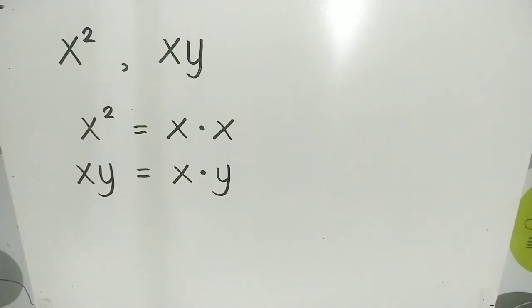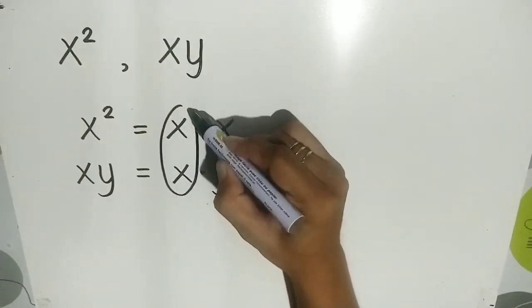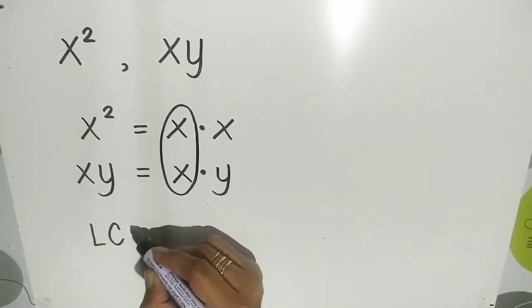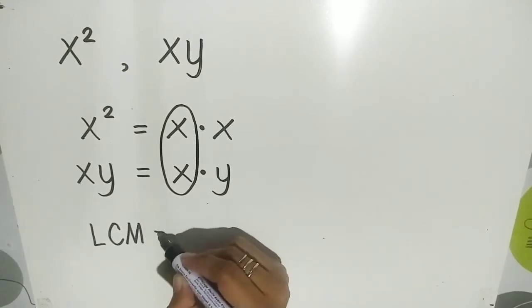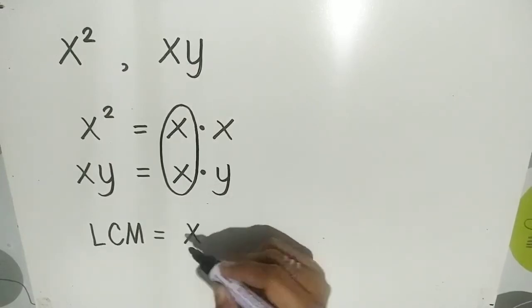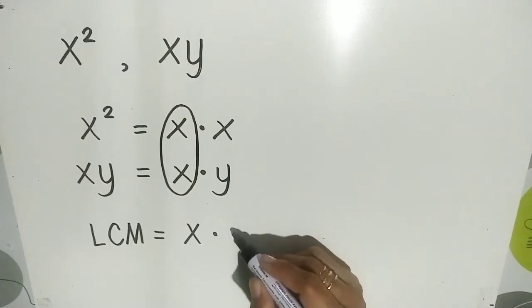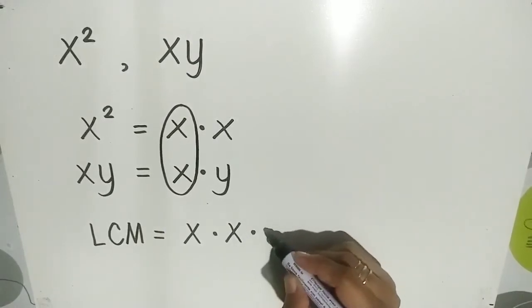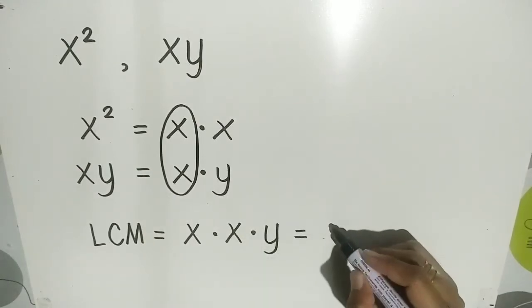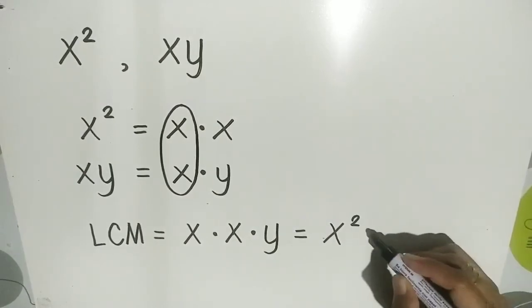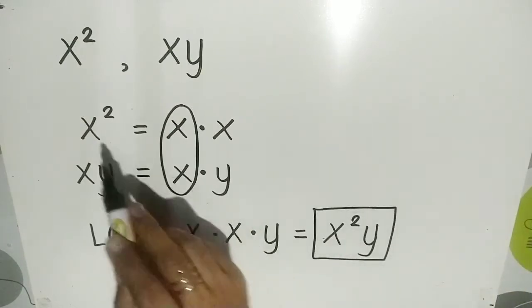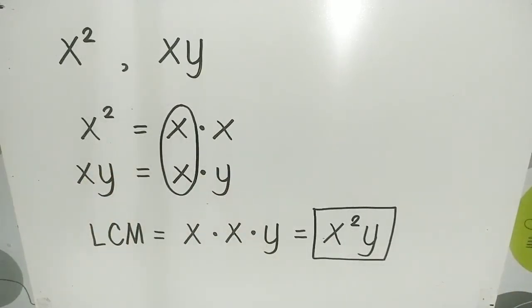Then, we are going to encircle the common factor. We have x here. Then, we will list down the common factor and the non-common factors, and multiply them to get the LCM. Common factor x, then the non-common factors: x and y. If you multiply them, we have x squared y.